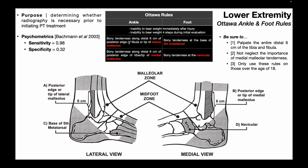Now let's look at the criteria specific to the ankle. The first is bony tenderness along the distal six centimeters of the posterior edge of the fibula or tip of the lateral malleolus. You go to the base of the lateral malleolus, go up six centimeters, and if there's tenderness to palpation anywhere along that posterior edge, that would necessitate radiography.